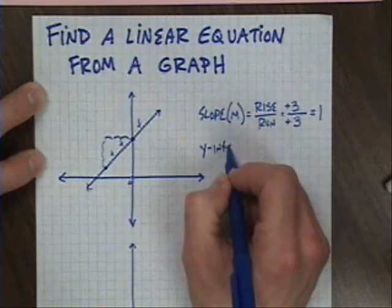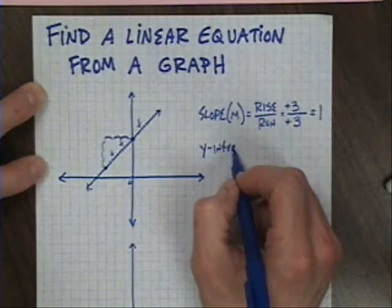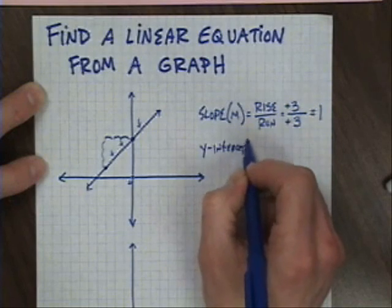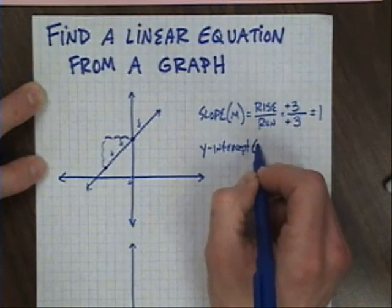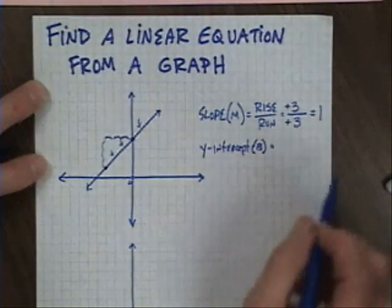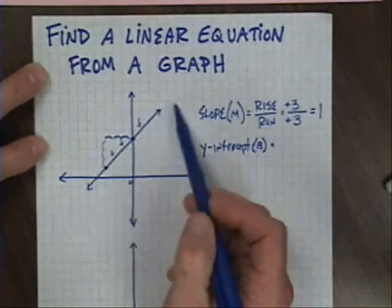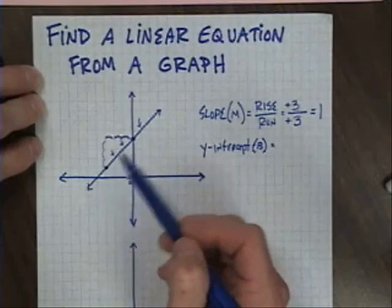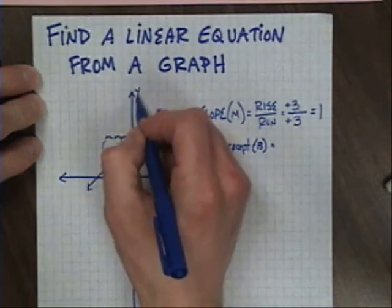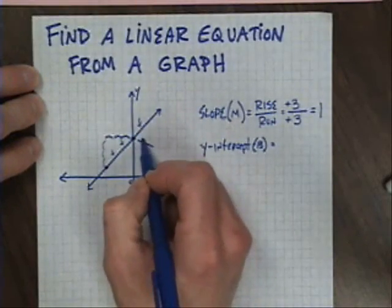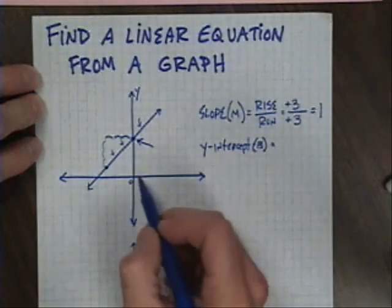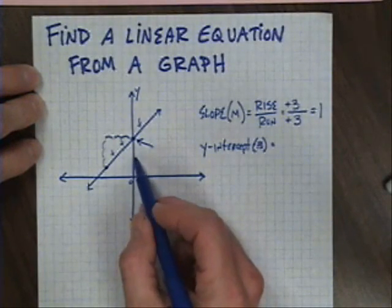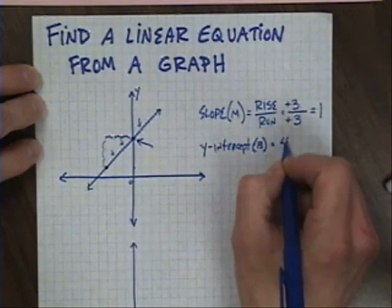My y-intercept, which I'm going to use the letter B for, is simply the point where the diagonal line, and it doesn't need to be diagonal, but it is in this case, where my line touches the y-axis. So in this case, I can just look and see that it touches right there. I'm going to count up from zero, one, two, three, four. So my y-intercept is simply four.